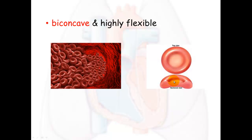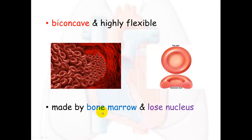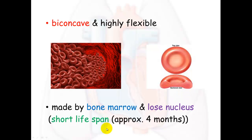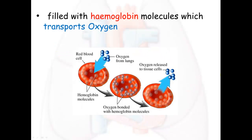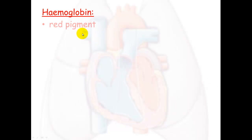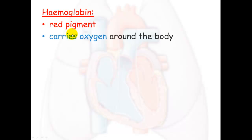Red blood cells are very flexible. They are made in the bone marrow and they lose their nucleus, which is why they get this indented, cave-like shape. The loss of the nucleus also means they have a very short lifespan — approximately four months. Red blood cells are filled with a substance called hemoglobin, which is responsible for transporting oxygen around the body. The hemoglobin molecules carry oxygen picked up from the lungs and transport it to the cells where it's needed, then release it.